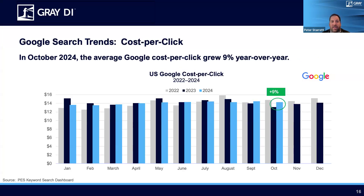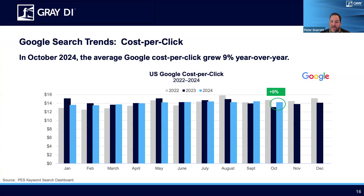Looking at cost per click, the average is up 9% this month — it was almost flat last month and down the month before. Seeing it up year over year could indicate it's becoming a little more competitive to market for certain programs. This is something to keep in mind as you think about your marketing costs. Last year there was actually a dip in the October 2023 number, so I wouldn't be too concerned that this is down slightly from overall costs in September. But it's something to keep in mind as you think about what it takes to market for these programs, even with the increase in search volumes we're seeing.